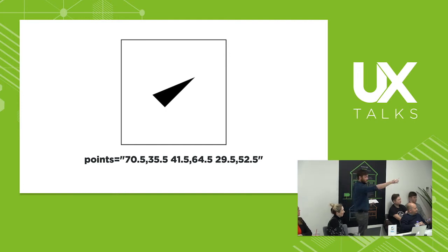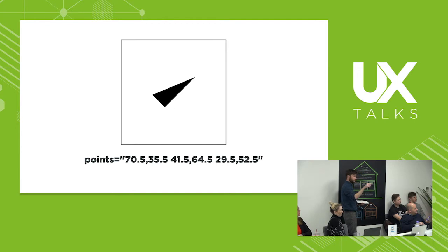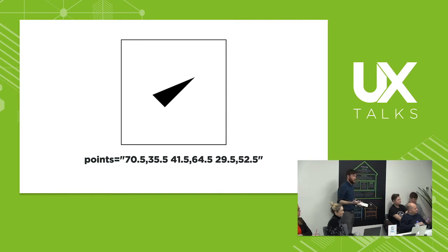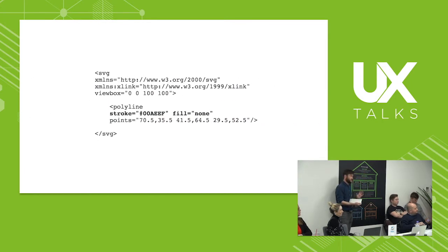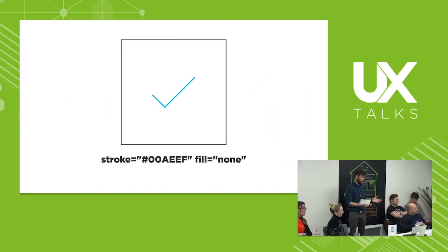So we get this — it's not exactly right. We've said it's 70 across and 35 down — that's your first point. Your second point is 41 across and 64 down, that's your bottom point. Then you've got 29 by 52 — that's your top one. Now the problem is polylines and pretty much any shape in SVG will try to self-fill, closing any gaps so it can deliver a fill. So we need to stop it doing that and add some styles — give it a stroke colour so it's on brand, and tell it not to fill.